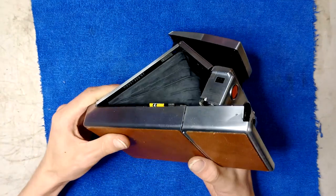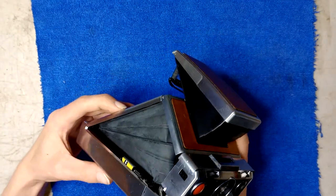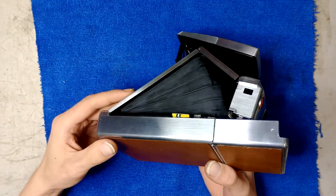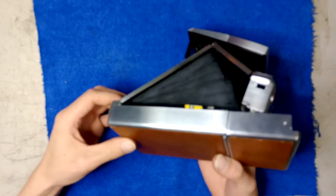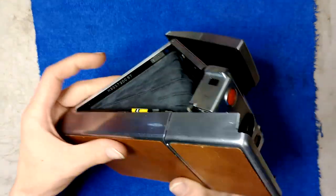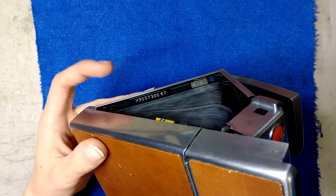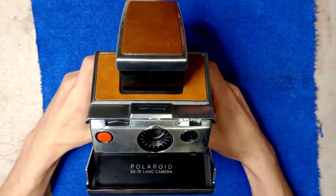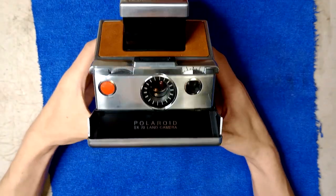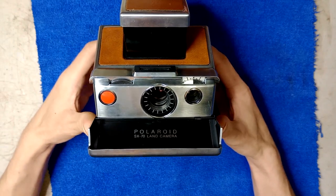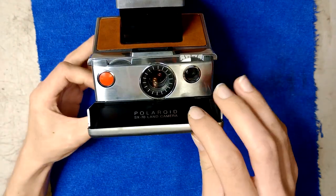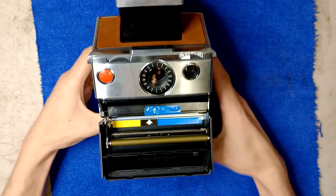This camera, I already looked it up, is dated August 20th, 1973. There's my serial number right there. And it's got a hybrid shutter in it, so hopefully it isn't a Fairchild shutter. Let's open it up and take a look.